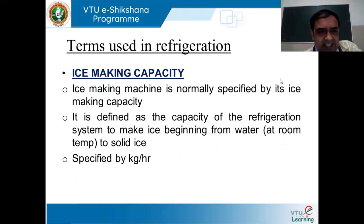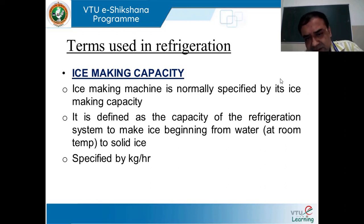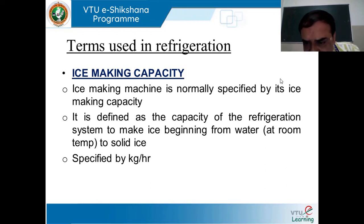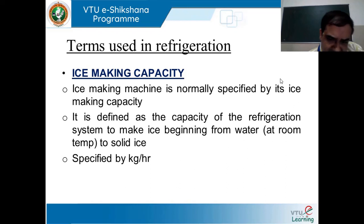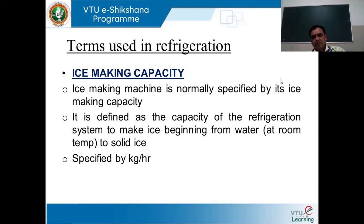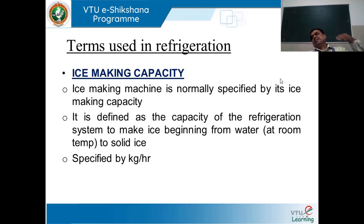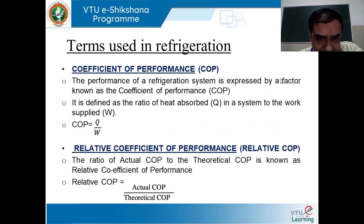The next term is ice making capacity. An ice making machine is normally specified by its ice making capacity, defined as the capacity of the refrigeration system to make ice beginning from water. Ice is formed depending on the quantity of water used, and when ice melts, the original condition of water is regained. This is ice making capacity in a very simple way.